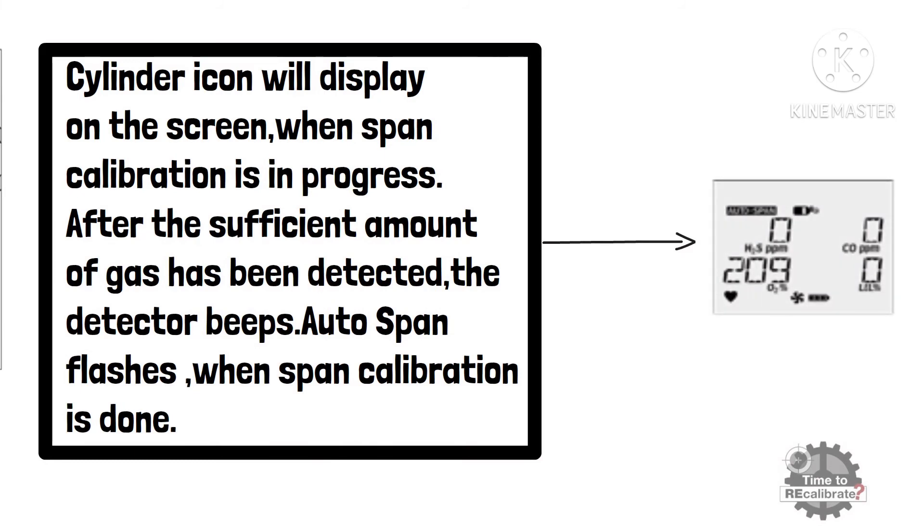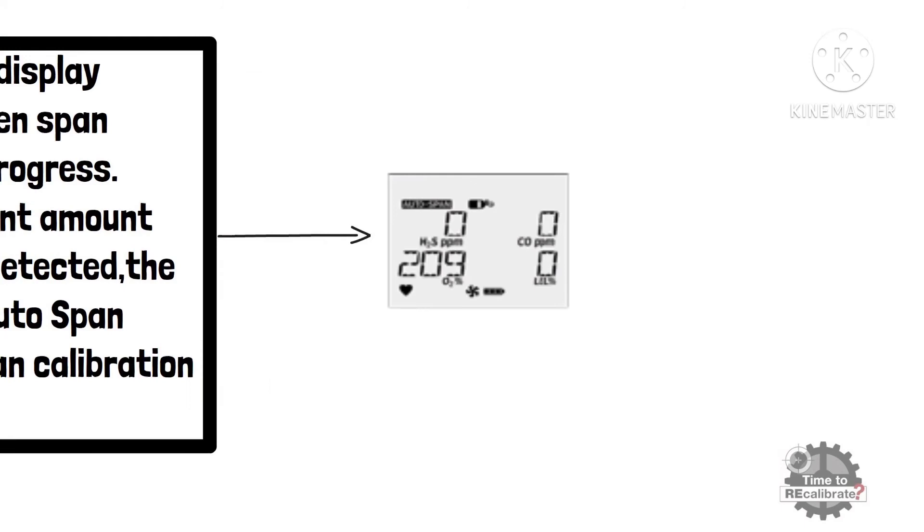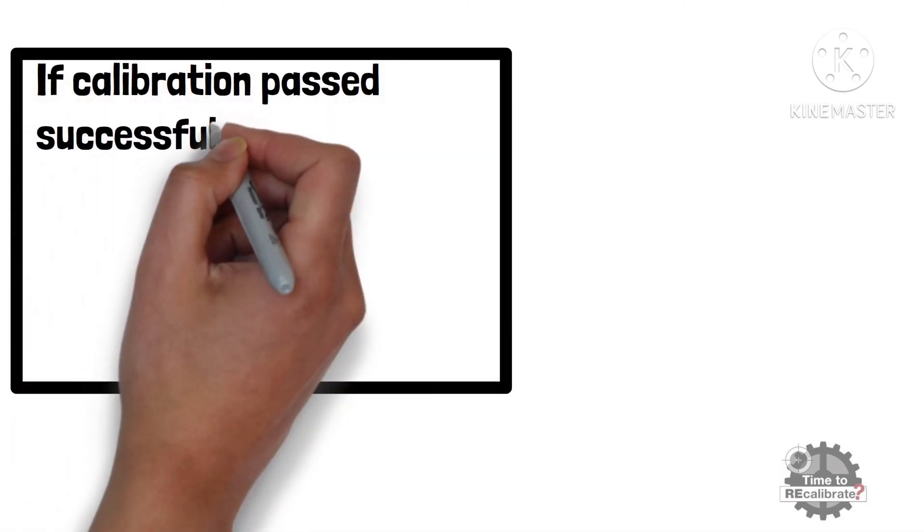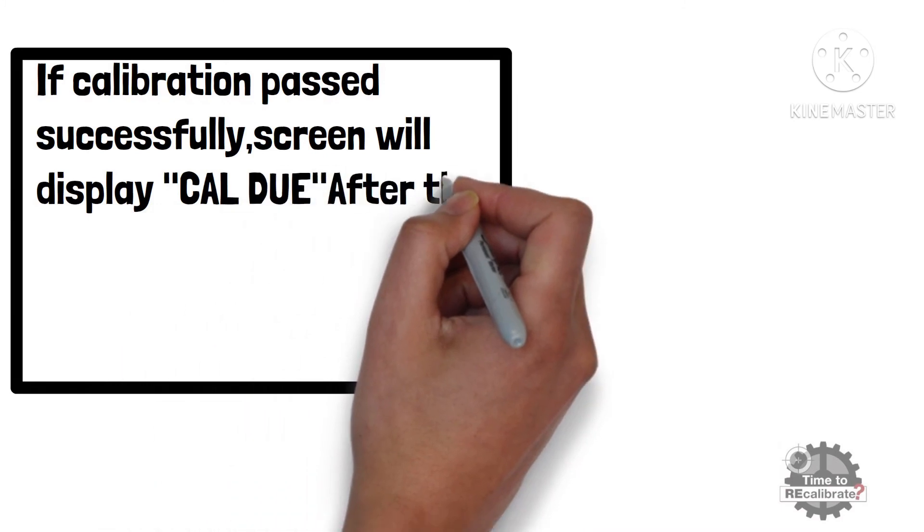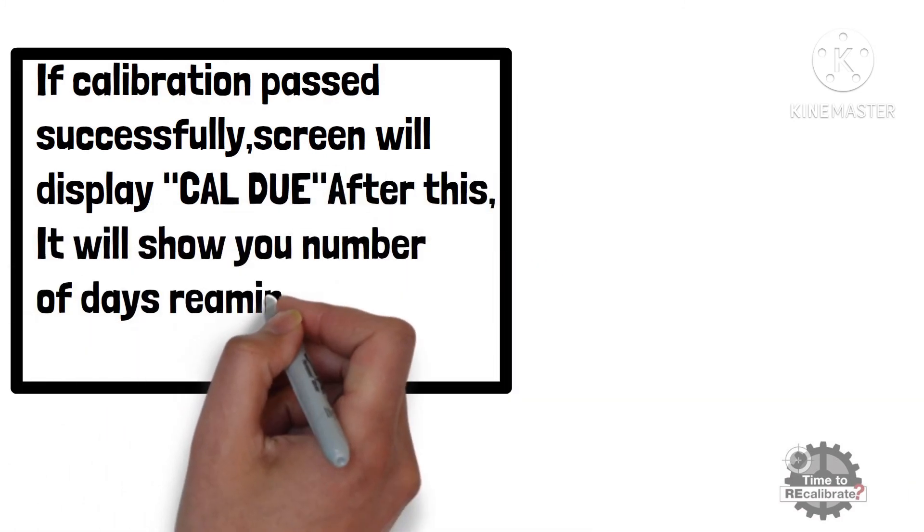If span calibration is done, then AutoSpan flashes on display. Turn off the gas regulator after this. If span calibration passes successfully, you can see CalDo on the screen and it will show you how many days are remaining for next calibration.